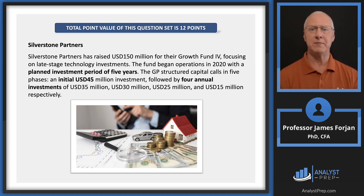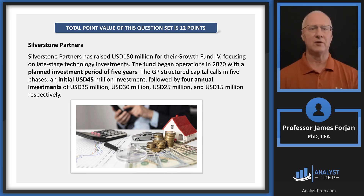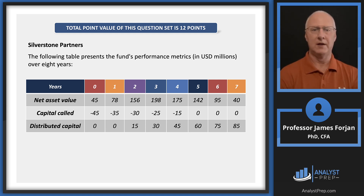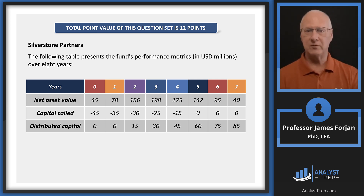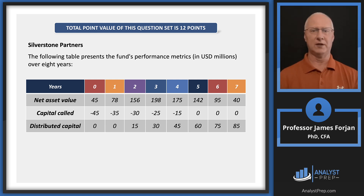Silverstone Partners, $150 million Growth Fund — late stage technology investments. Operations began in 2020, with a planned investment period of five years. So there are some phases: 45 right away, and then 35, 30, 25, and 15. So we'll put together a little table for you. Look at that middle row — there's the capital called all the way up through the end of year four. We'll start with a net asset value of 45. Distributed capital has to be zero in time period zero, and then we adjust as we go out to years four, five, six, and seven. We're going to use this table to calculate some performance measures.